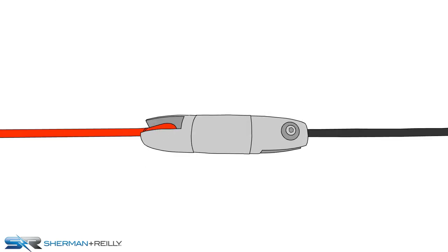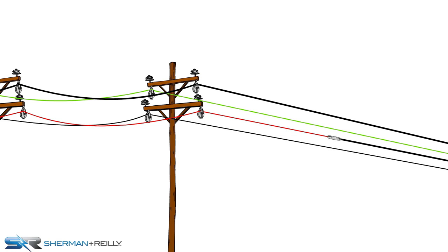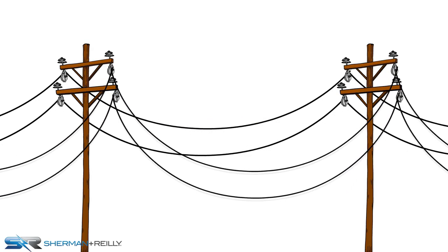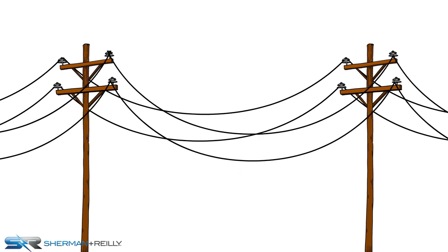Again, using a swivel, connect the conductor to the bull line and pull it through. The process is repeated until all the conductors are pulled through and tied off. After all the conductors are pulled through, they will be ready to be later set with final sag. The stringing blocks will be removed and the conductor is secured to the insulators.